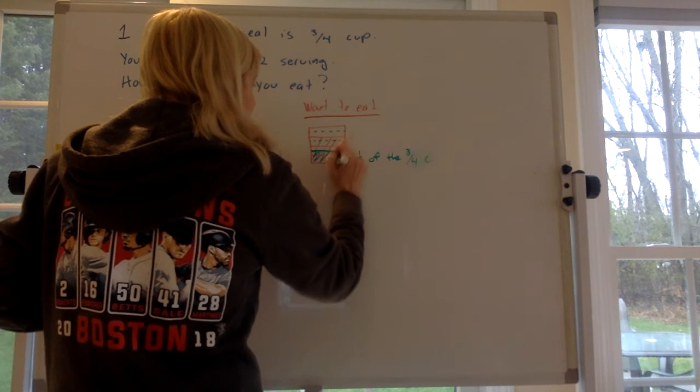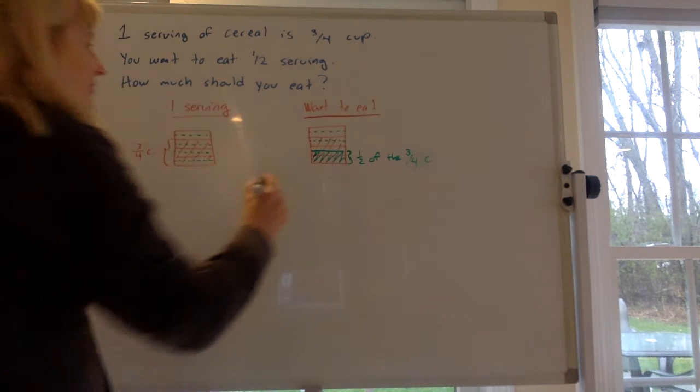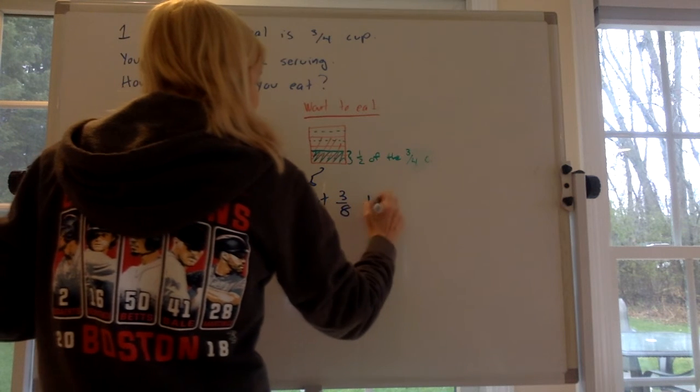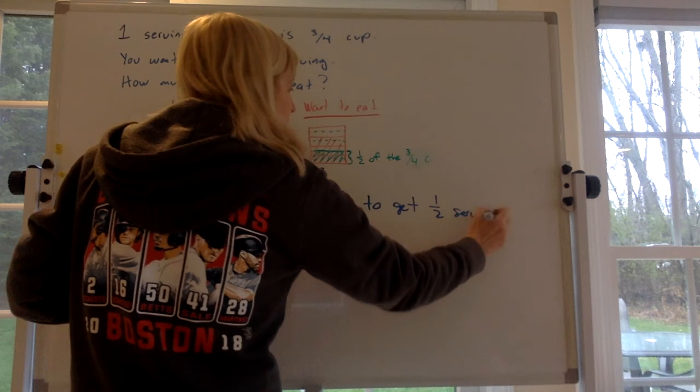So we want three of these blocks. How much is three of those blocks? It's three-eighths. So you should eat three-eighths to get one half serving.